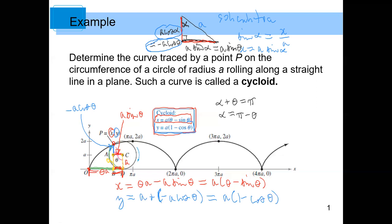Hopefully that is a satisfying conclusion. Essentially, you just let θ go on forever. Once θ reaches 2π, you've completed one revolution. Then the curve periodically repeats itself. It's amazing that we can even write down an equation for this cycloid — but we can, and we just did.